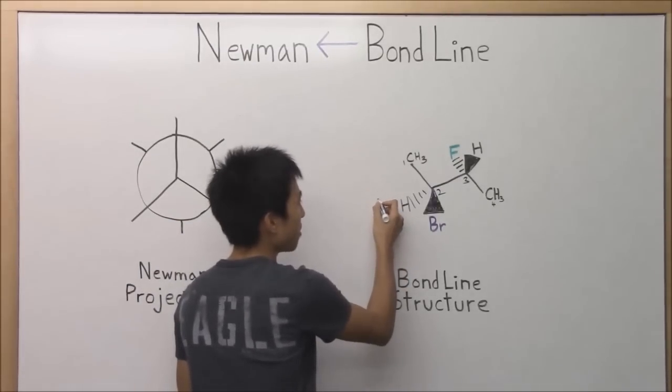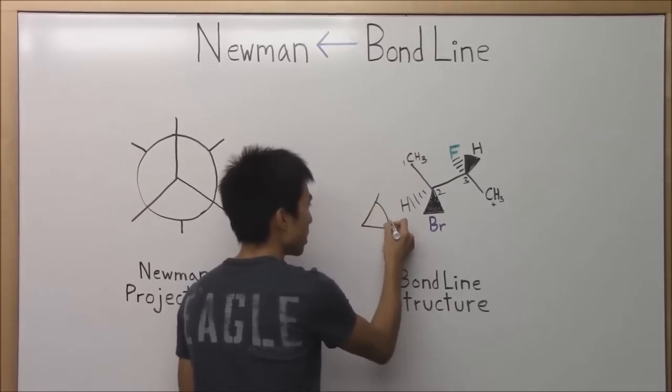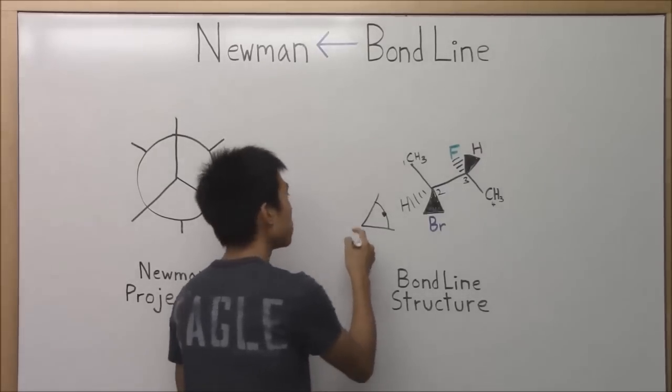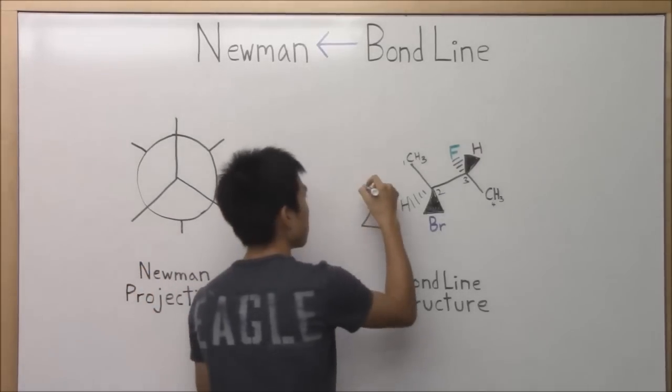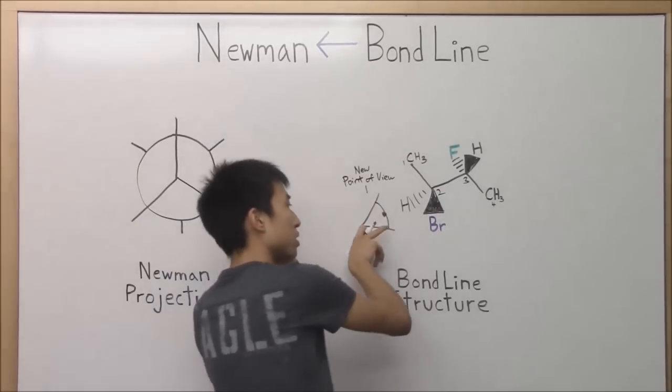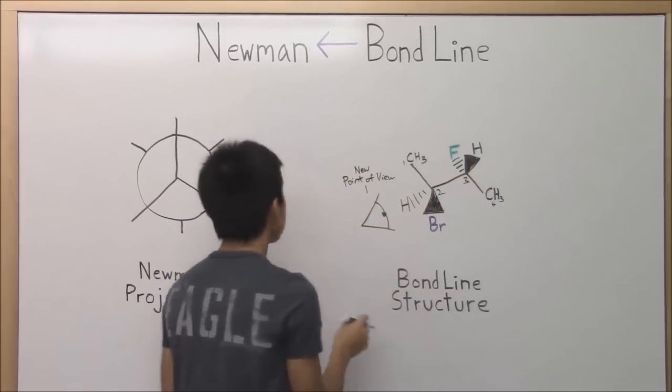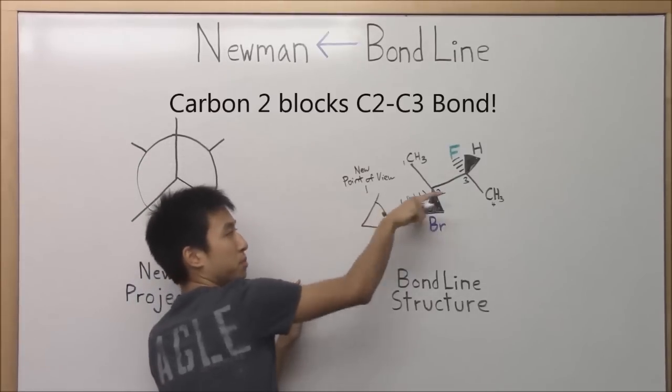The first I would recommend you draw is right here, this eyeball over here. This is going to be our new point of view when we're looking at it in a Newman projection point of view. We're going to be looking down the carbon two and three bond, so that's why you can't see it anymore if that's your point of view.